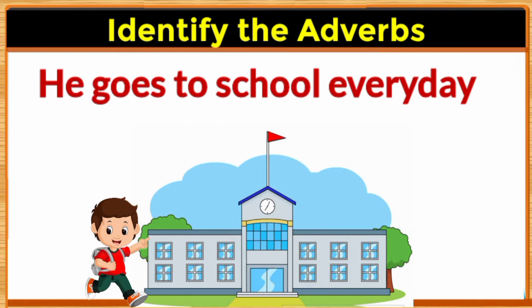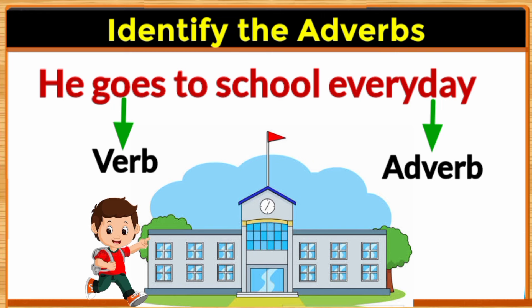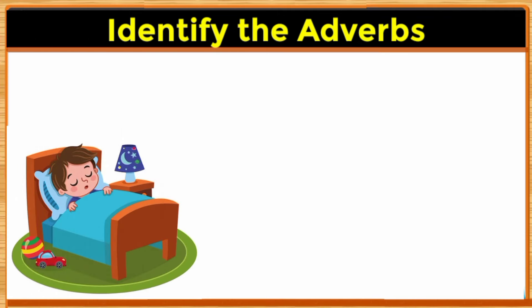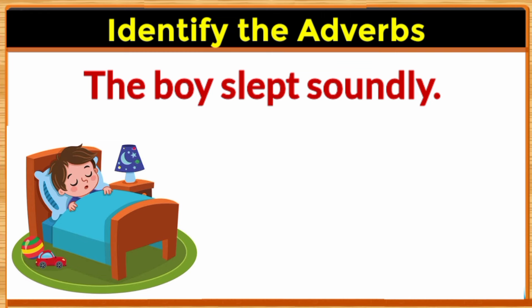For example: He goes to school every day. In this sentence, the word goes shows us the action — it is a verb. The word every day tells us more about the verb, that is, how often this boy goes to school. So every day here is the adverb.